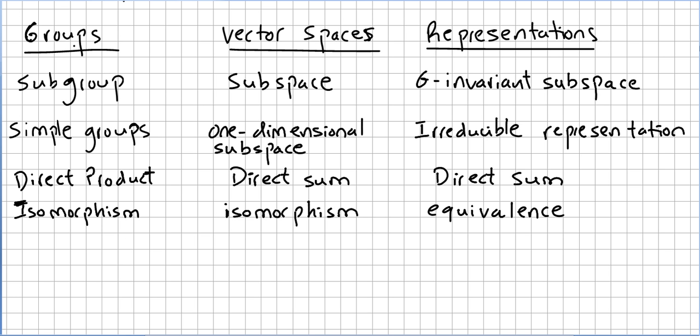Okay, in terms of groups, we say isomorphism. In vector spaces, we also have isomorphisms. But in representations, we have equivalence. So there is a video for equivalent representations.